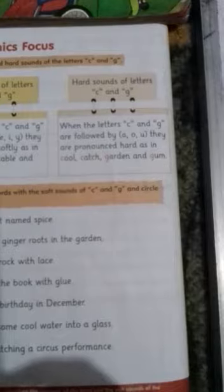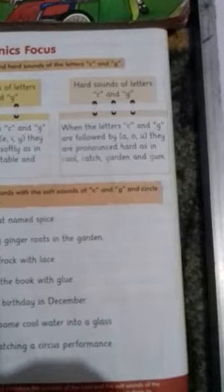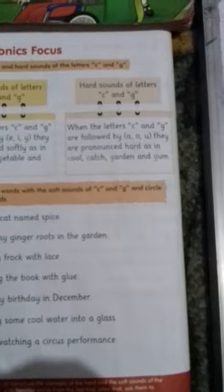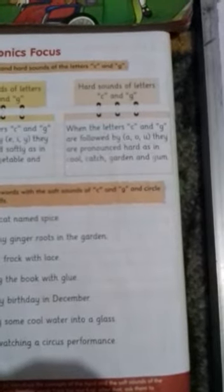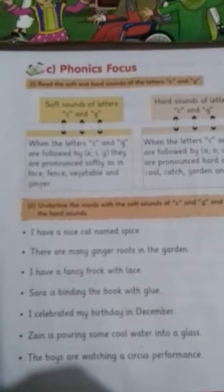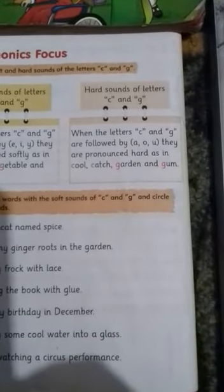When the letters C and G are followed by A, O, U, they are pronounced hard, as in cool, catch, garden, and gum. Hard sound of C is 'kh' and hard sound of G is 'g'. Jab A, O, U ke saath aayenge to ye hard pronounce honge. Soft sound of C is 's', soft sound of G is 'j', hard sound of C is 'kh', and hard sound of G is 'g'.